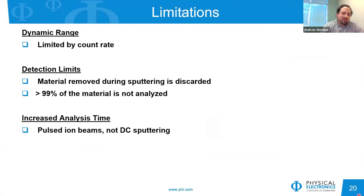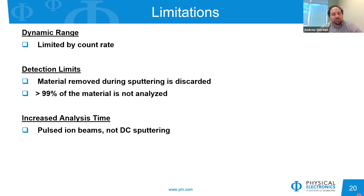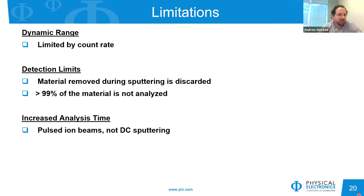Despite its advantages, TOF-SIMS has some limitations compared to quadrupole or magnetic sector depth profiling. Dynamic range is limited by the count rate, making six orders of dynamic range very difficult to achieve. Detection limits are also limited because 99% of the material being removed is not analyzed — each sputter event discards that material, unlike a DC beam where sputter and analysis beams are the same and you're looking at everything coming off one species at a time. Analysis time is increased because you're switching between pulsed beams rather than using a DC beam.